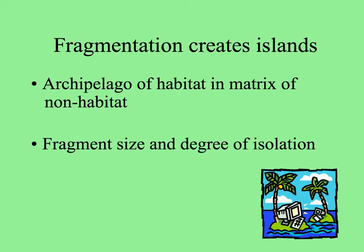Fragmentation, whether it's natural or anthropogenic, creates islands of habitats. You can think of an archipelago — a group of islands of habitat — in a matrix of non-habitat. The matrix is the stuff between the patches. We can look at how big the patches of habitat are and how far they are from one another — their degree of isolation.